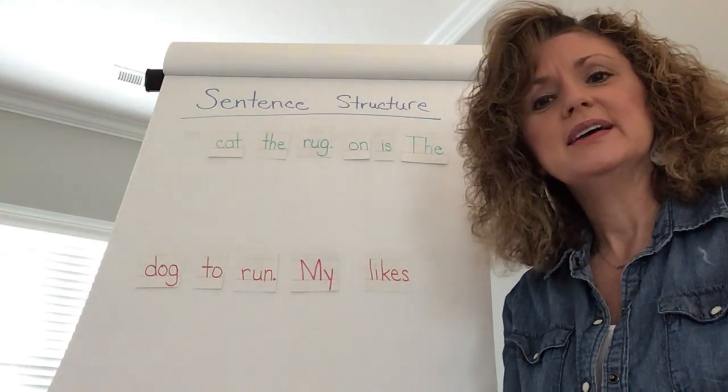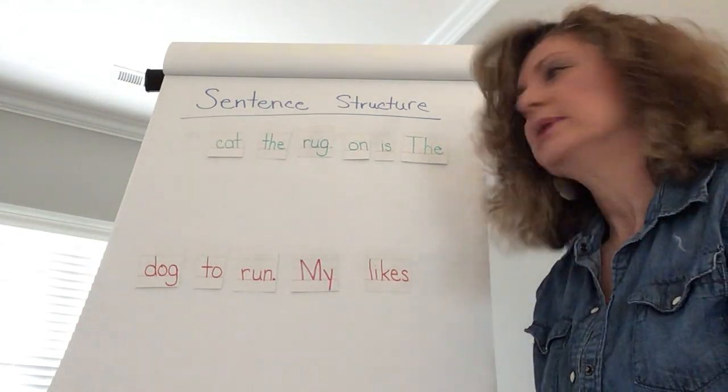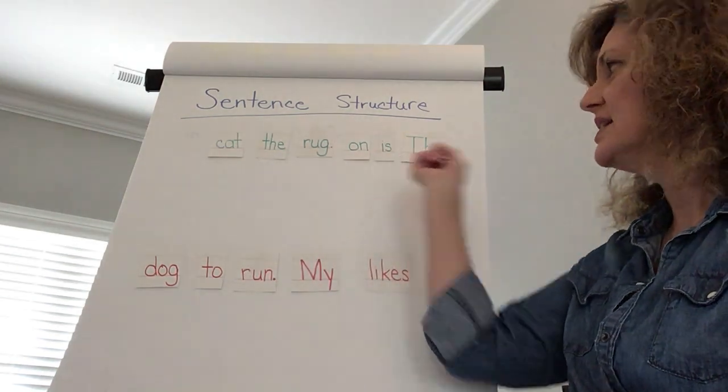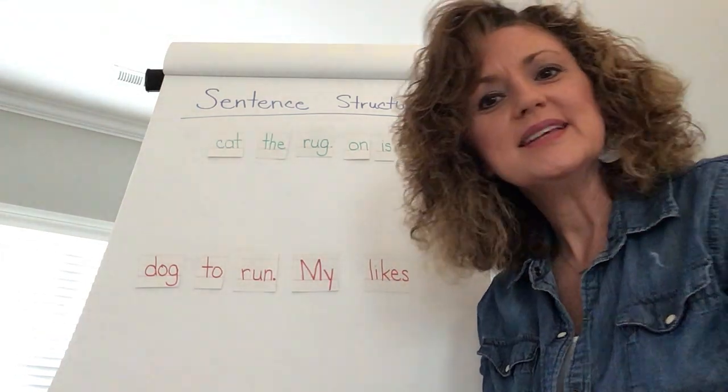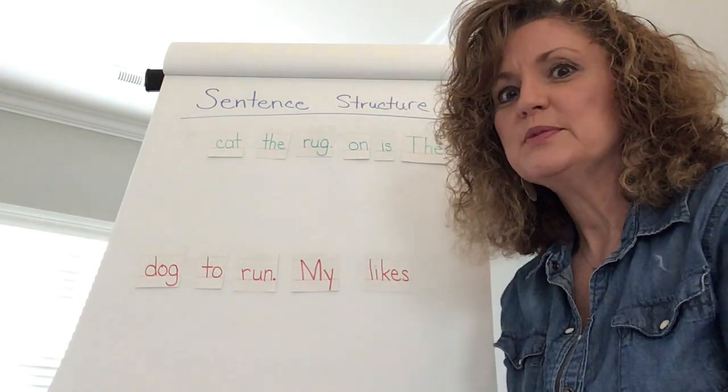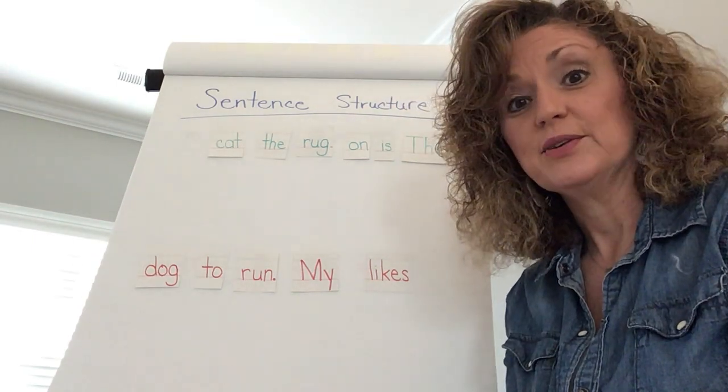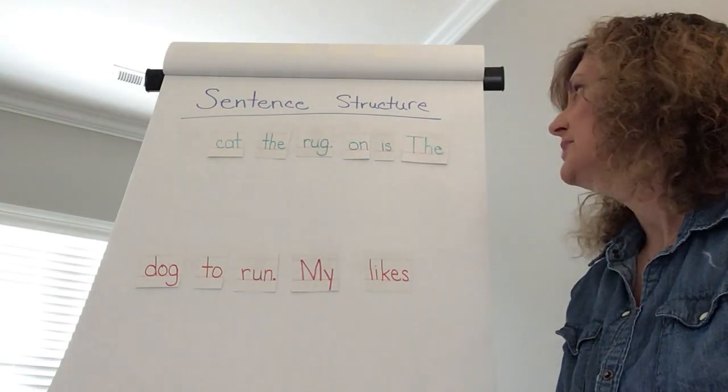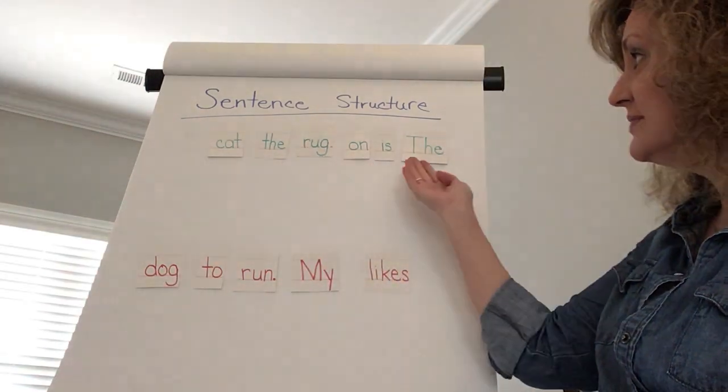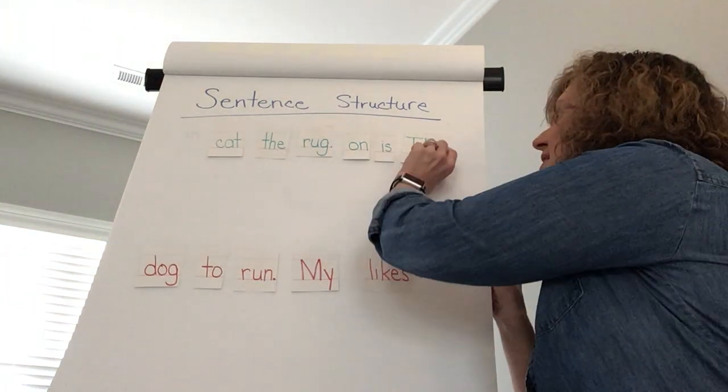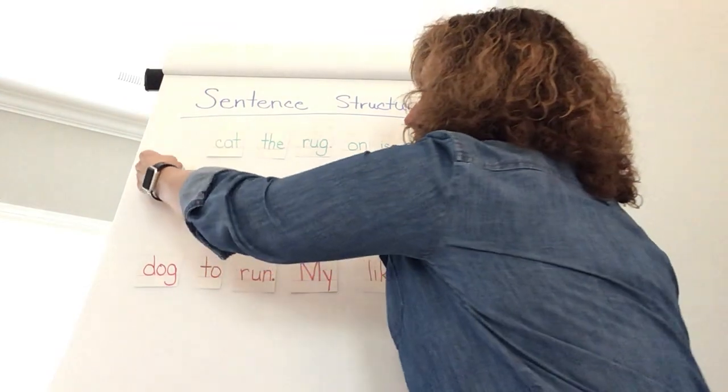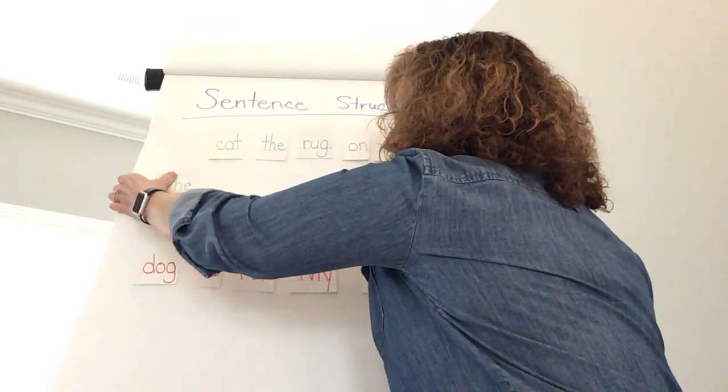So let's begin. Let's look at the sentence that I have up here and it says cat the rug on is the. That doesn't make sense but I know I can remember some of my rules when I'm putting a sentence together and the first rule was the sentence always has to begin with a capital letter. So as I look through my words I see that this word the has a capital T. So I know that it is starting my sentence. So I have the.